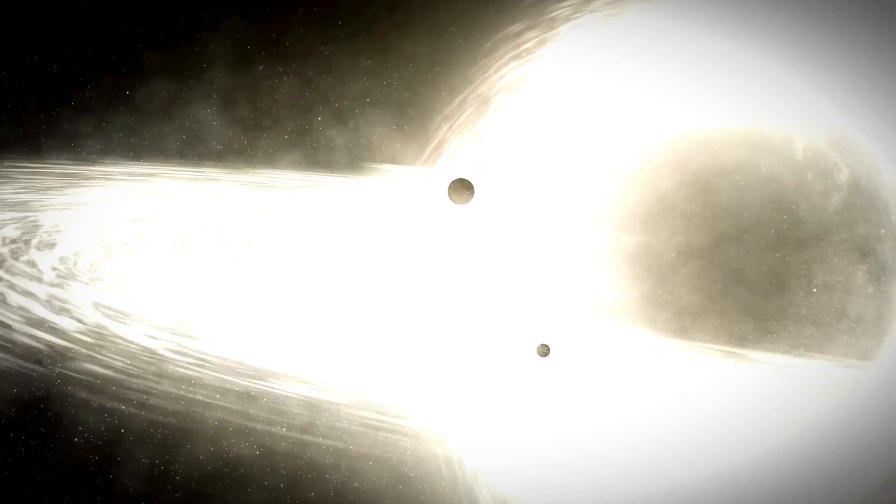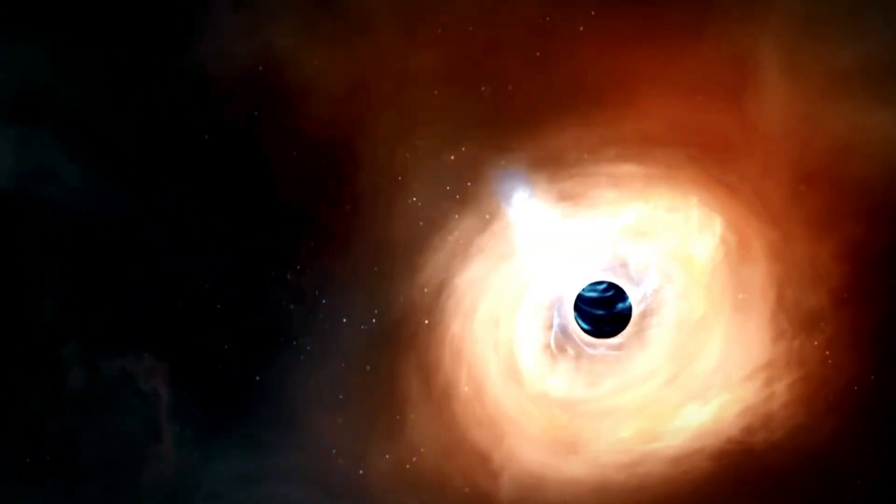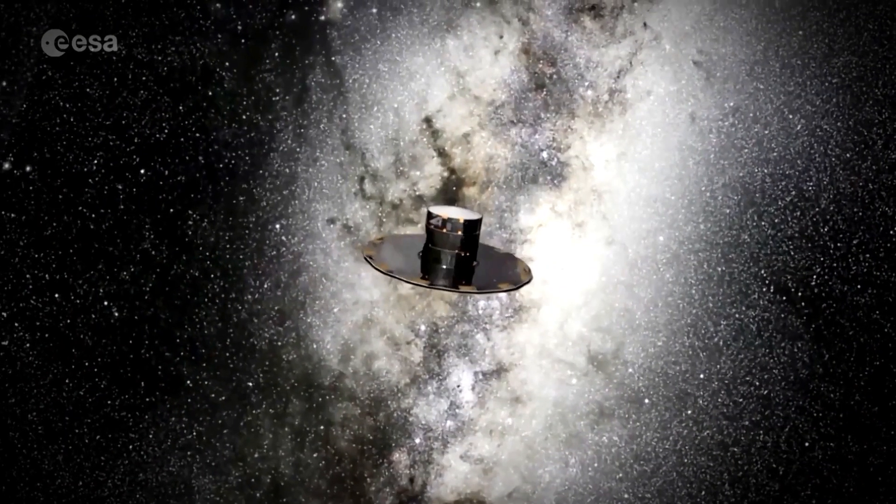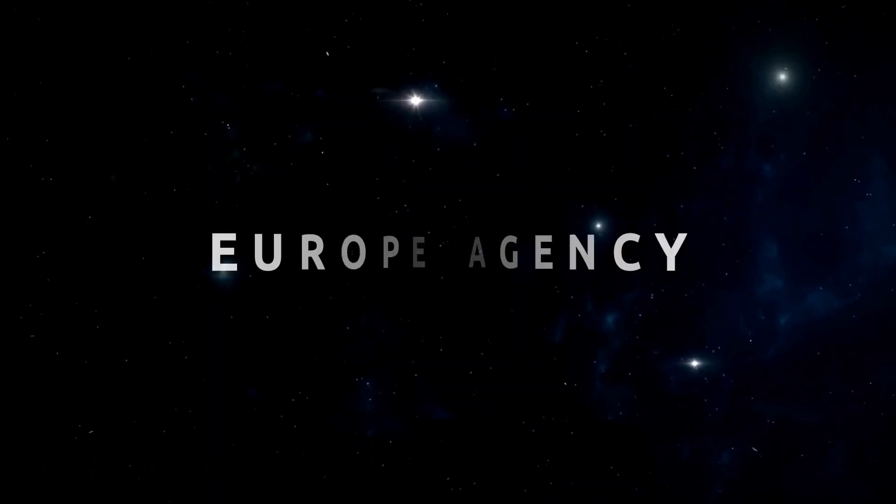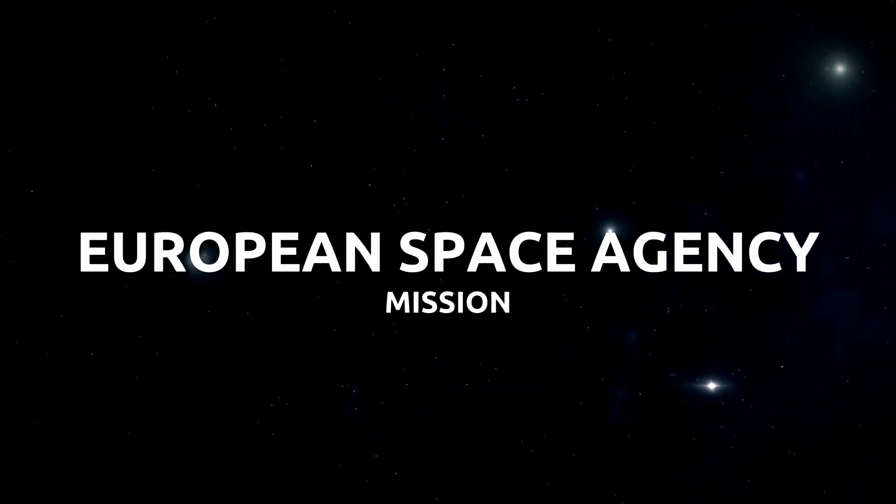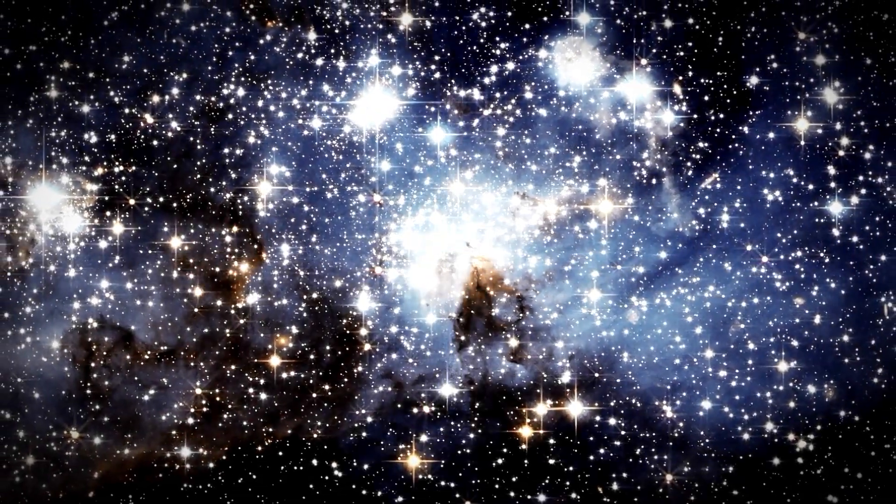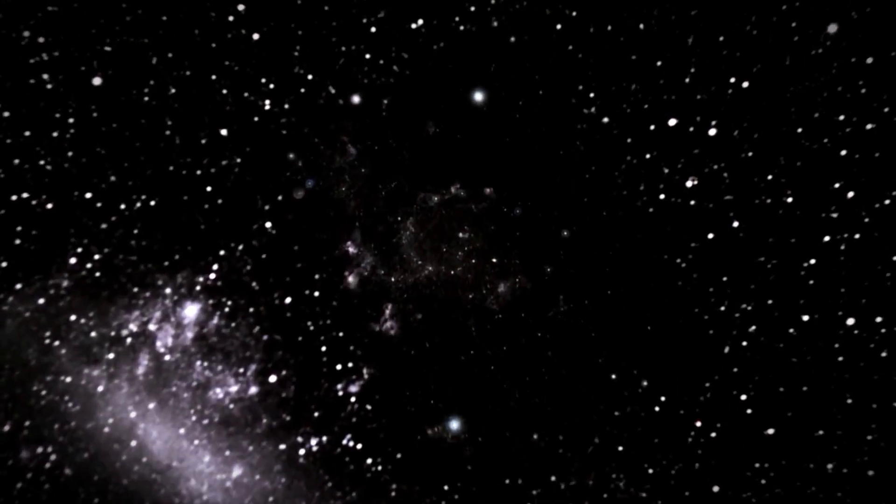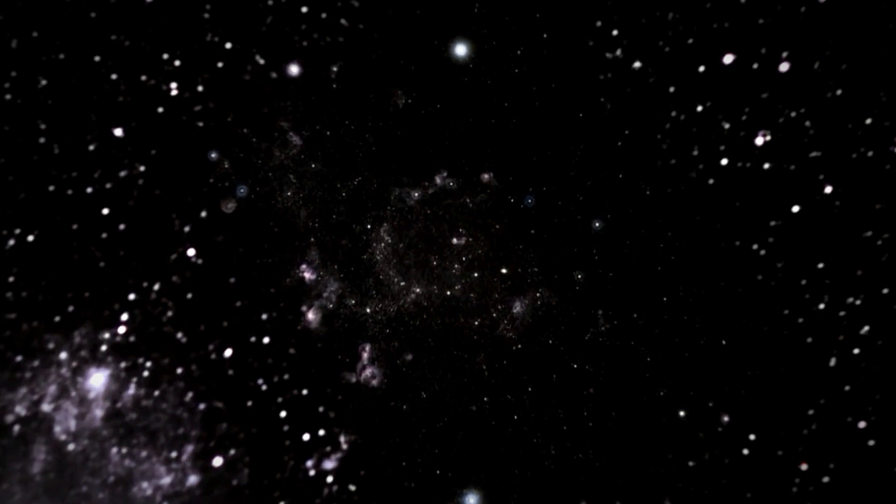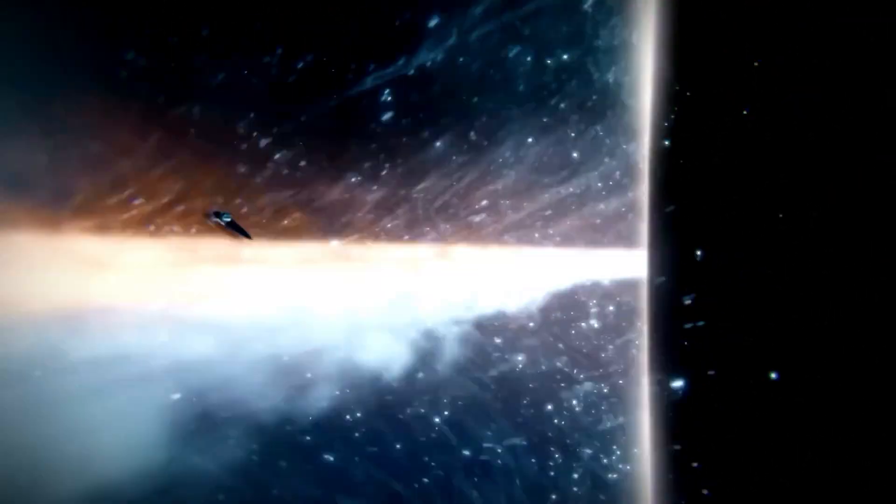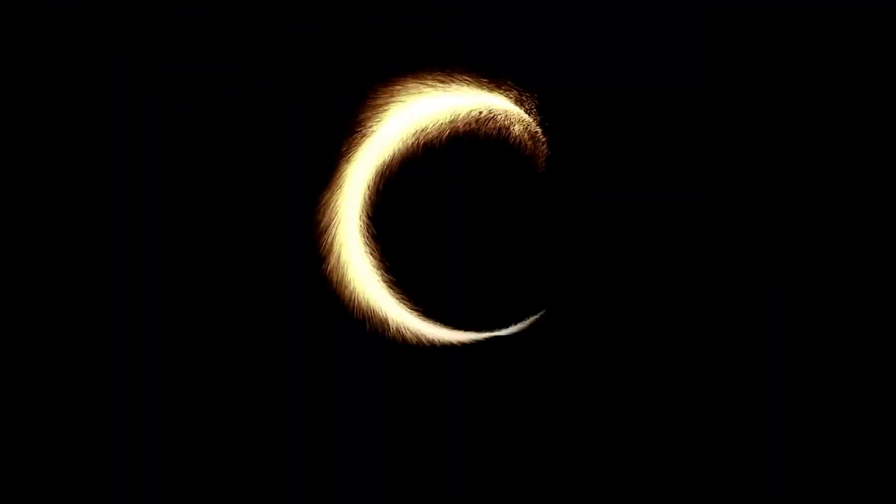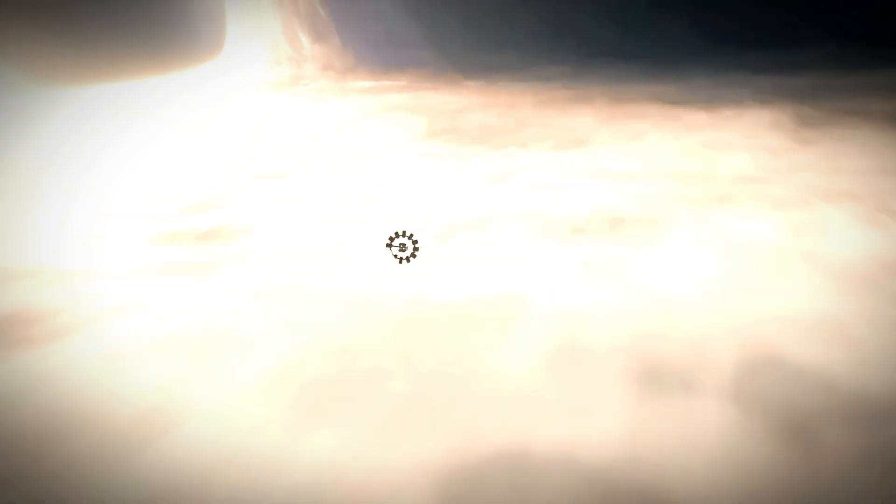That's the case with Gaia BH1, though it's still a challenging finding. It got its name from the Gaia spacecraft, a European space agency mission designed to map out the positions of almost two billion stars. Included in its observations is the system where the black hole is found, which also has a sun-like star that accompanies the mysterious black hole.